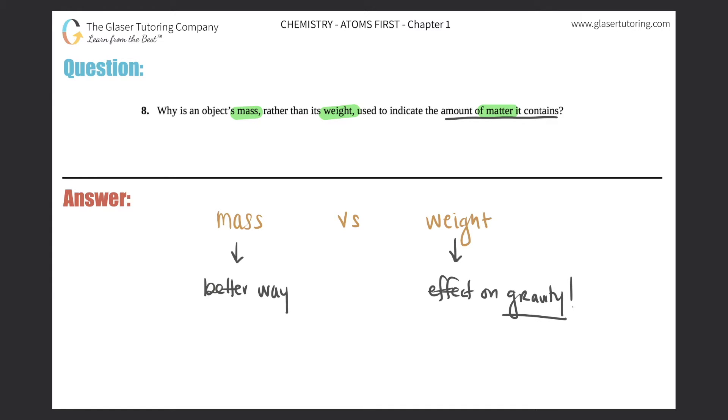So an object, specifically an inanimate object that has a standard mass, would have a different weight depending on what planet it was on. So basically if an object was on Earth, let's just say that it weighed 80 pounds.